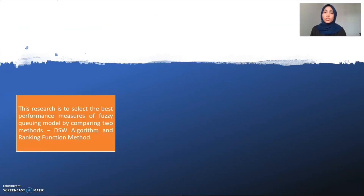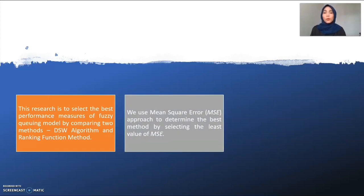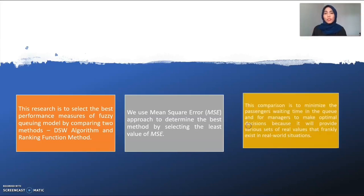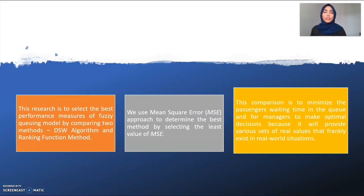This research is to select the best performance measures by comparing two methods: the DSW algorithm and ranking function method. We use a mean square error approach to determine the best method by selecting the least value of MSE. This comparison is to minimize the customer waiting time and also for managers to make an optimal decision, because it will provide various sets of real values that frankly exist in real world situations.